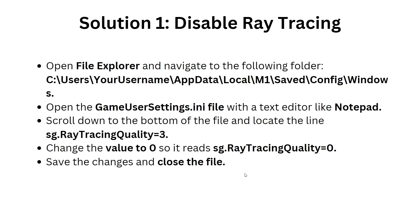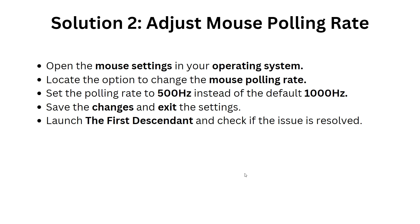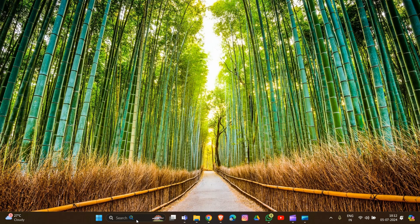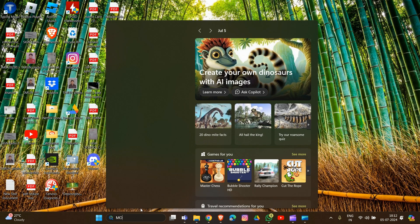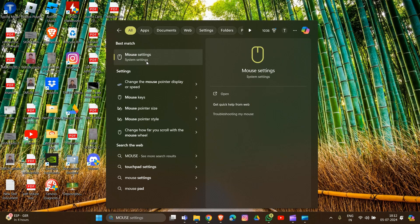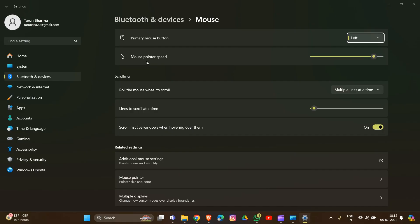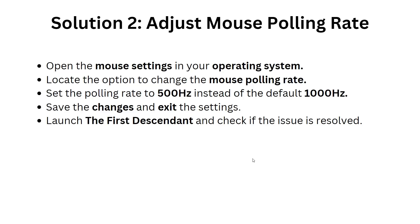The second solution is to adjust your mouse polling rate. Open your mouse settings — type 'mouse settings' in the search bar. Set the polling rate to 500 Hz instead of 1000 Hz, save the changes and exit the settings.